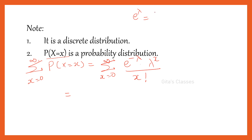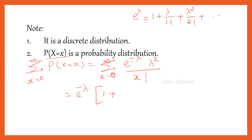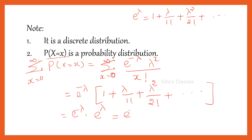We use the series expansion of e^λ: 1 + λ/1! + λ²/2! + ... up to infinity. Since e^(−λ) is independent of X, we take it outside. Substituting values: X=0 gives λ⁰/0! = 1; X=1 gives λ/1!; X=2 gives λ²/2!, and so on. This expansion is nothing but e^λ. Therefore, the sum equals e^(−λ) · e^λ = e^0 = 1.